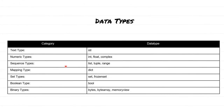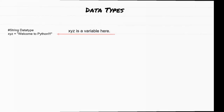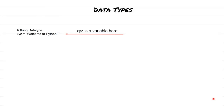Coming back to data types — we have many different types of data types to use, depending on the use case. In Python, these are all the types of data types available. I have put them all together in a single sheet, so you can take a screenshot or bookmark it. We are going to discuss all of these data types while we are programming.